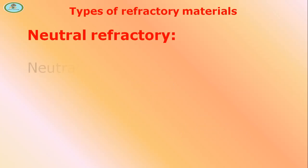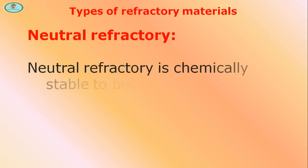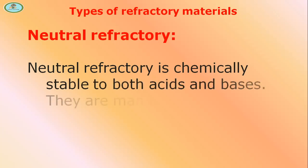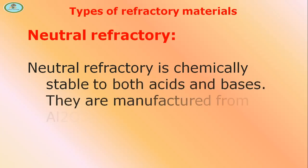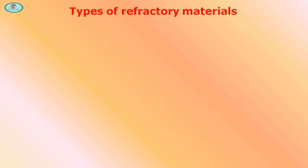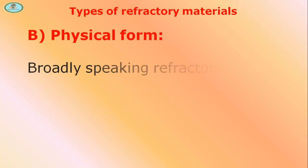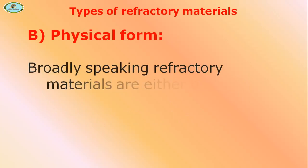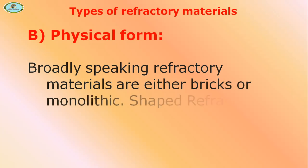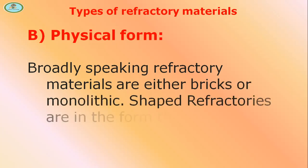Neutral refractories are chemically stable to both acids and bases. They are manufactured from Al2O3, Cr2O3, and carbon. In terms of physical form, broadly speaking, refractory materials are either bricks or monolithic.